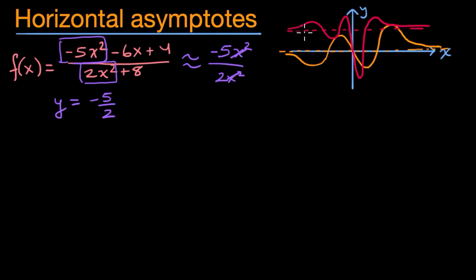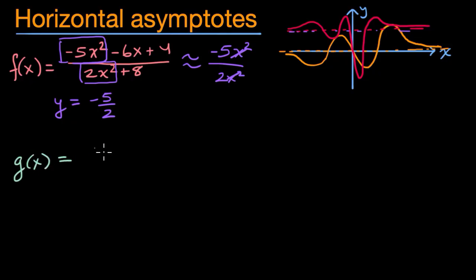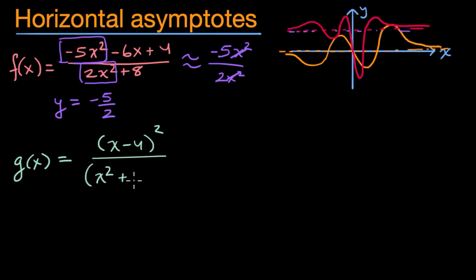So you could imagine a horizontal line at negative five halves for that function. Now let me give you another example. Here I'm going to have the numerator and the denominator in factored form. Let's say we have g of x equal to x minus four squared, over x squared plus five times three x minus two.